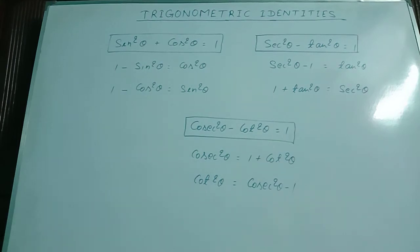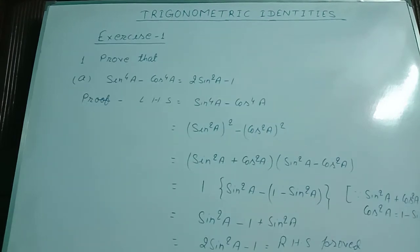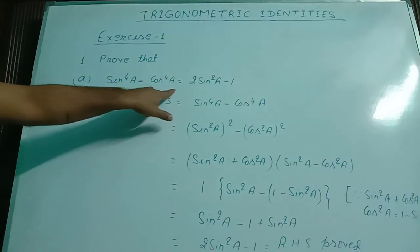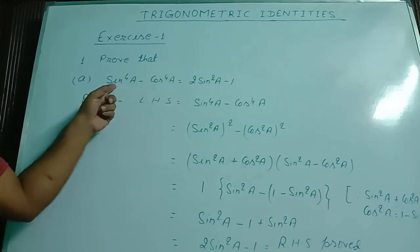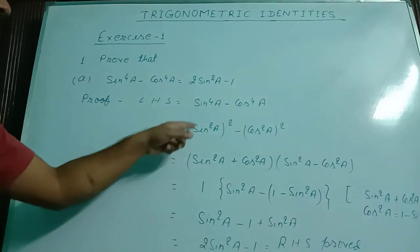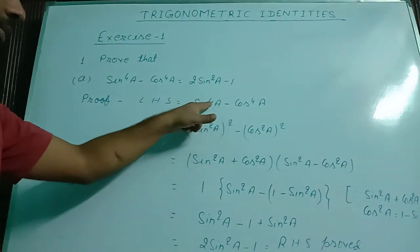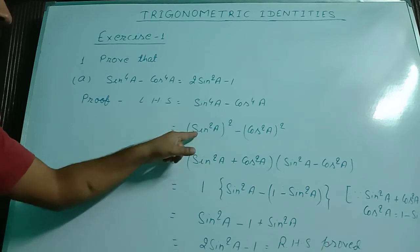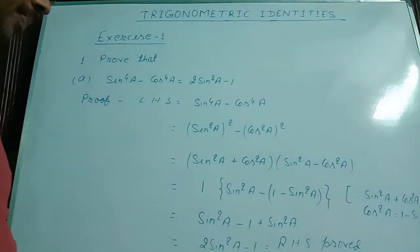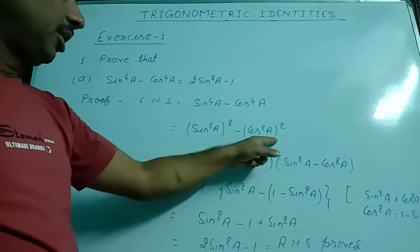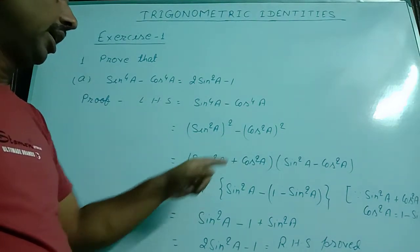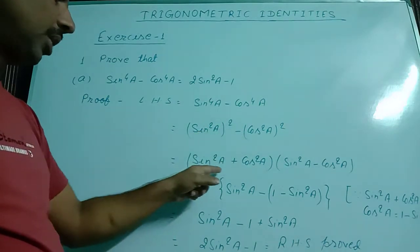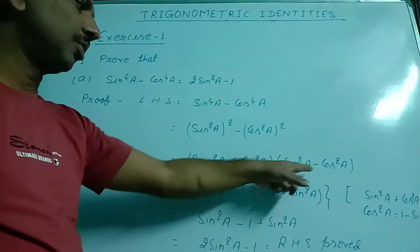Let us go to the exercise. Exercise 1, question number 1a: prove that sin to the power 4a minus cos to the power 4a equal to 2 sin square a minus 1. Taking LHS: sin to the power 4a minus cos to the power 4a. We can write this as sin square a whole square minus cos square a whole square, which is in the form of a square minus b square. So, applying the identity a plus b into a minus b, at the place of a we have sin square a and at the place of b we have cos square a.